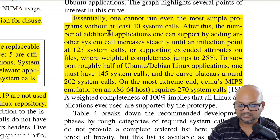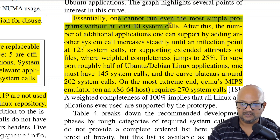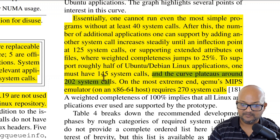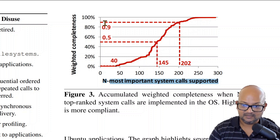Another really interesting analysis the authors did was look at subsets of the syscall interface to see which subsets you need for different levels of functionality. If you were to write a Linux compatibility layer, which system calls would you have to implement to get the most bang for your effort? What they found was that you need a core set of about 40 system calls for even the simplest application, and then you can support more and more applications up to about 125 system calls. This graph expresses the same numbers: you need about 145 syscalls to hit a 50 percent weighted completeness ratio, and about 202 to hit a 90 percent weighted completeness ratio.